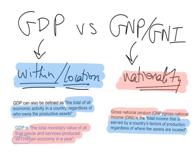For example, there are American factories and businesses all over the world. Because they are outside America, their output or economic activity is not calculated in the United States' GDP, but it will be calculated in the United States' GNP, because these are American businesses owned by American citizens. Similarly, if there were French businesses within the borders of the United States, their output will be calculated in the United States' GDP, but not in France's GDP — because they are located outside France. But they will be calculated in France's GNP, and they will be deducted from the United States' GNP, because this economic activity is not American.